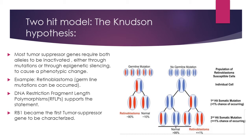The most common known example is retinoblastoma, an eye cancer, where germline mutations can occur. DNA restriction fragment length polymorphisms, or RFLPs, support this two-hit model hypothesis, and RB1 became the first tumor suppressor gene to be characterized. Tumor suppressor genes suppress tumor formation; if the RB1 gene is inactivated, it will cause tumor formation.